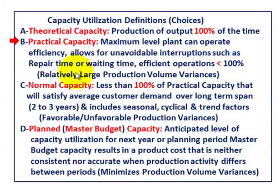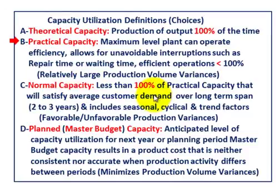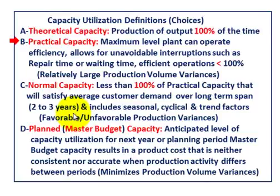One important thing when talking about denominator hours and capacity utilization is the production volume variance. Practical capacity is going to give you a relatively large production volume variance. The third choice, normal capacity, is less than 100% of practical capacity but will satisfy customer demands over a long-term span of two to three years, including seasonal, cyclical, or trend factors. Some years you'll have a favorable production volume variance, other years unfavorable — it moves between the two.